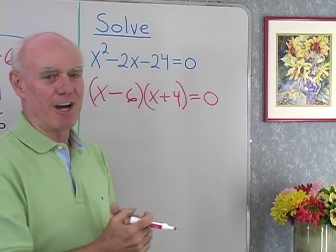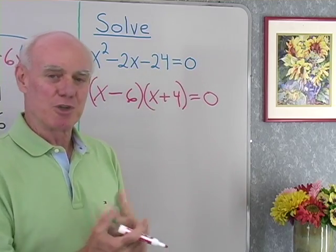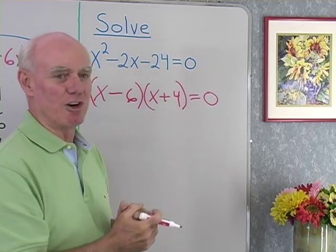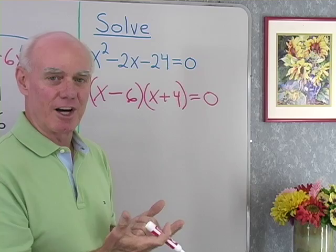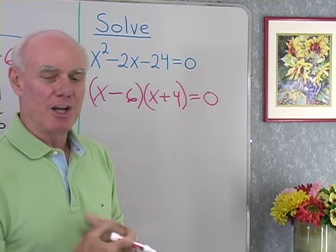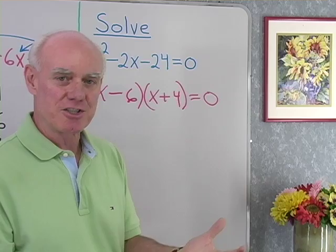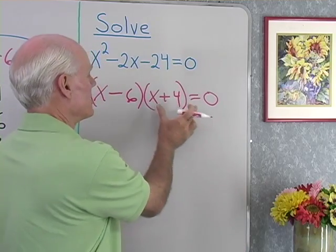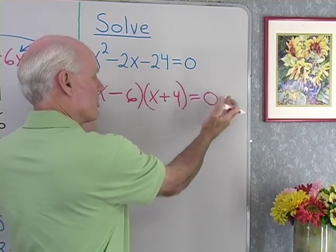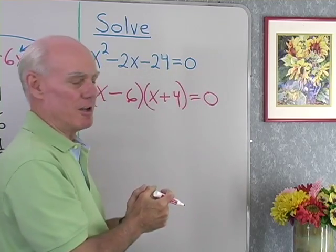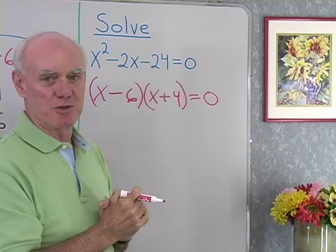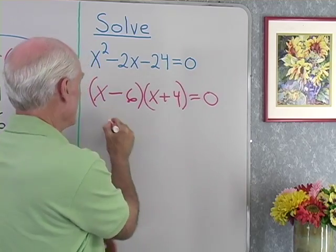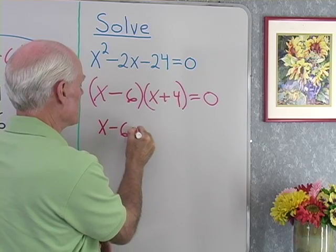Now I can use the zero factor property, which tells me that if I multiply two expressions and end up with zero, one or the other or both has to be zero. The only way to multiply and get zero is to multiply by zero. If either factor is zero, I have a solution to my equation.